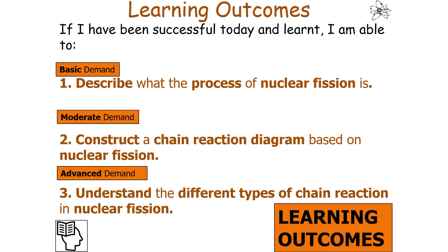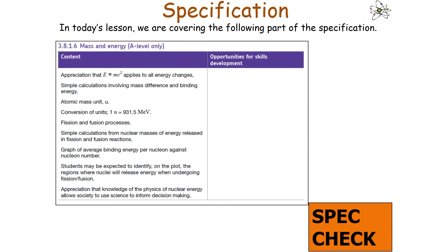If we've been successful and learnt in today's lesson, we can describe what the process of nuclear fission is, construct a chain reaction diagram based on nuclear fission, and understand the different types of chain reaction in nuclear fission, which links into AQA A-level physics specification 3.8.1.6 mass and energy.